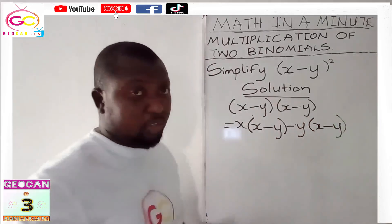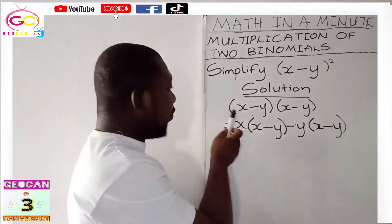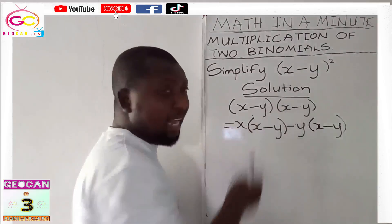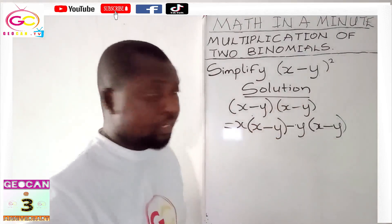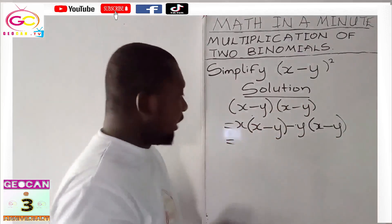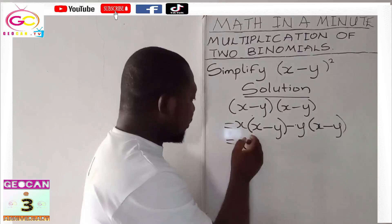It's simply because there is a rule that each term in one bracket should multiply everything in the other bracket. Let's continue. Now x times x will give us x².